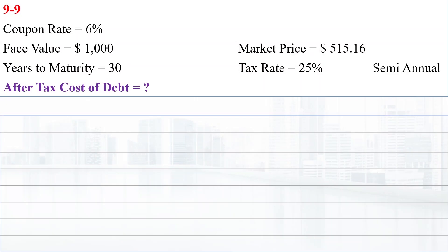We have a bond that pays 6% coupon rate semi-annually with a face value of $1,000. The current market price is $515.16, it matures in 30 years, and the tax rate is 25%.